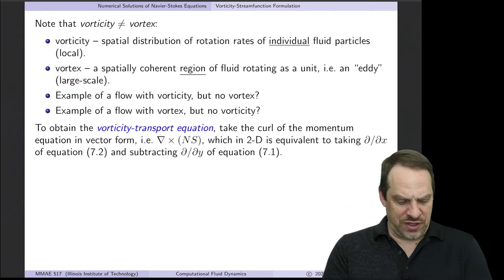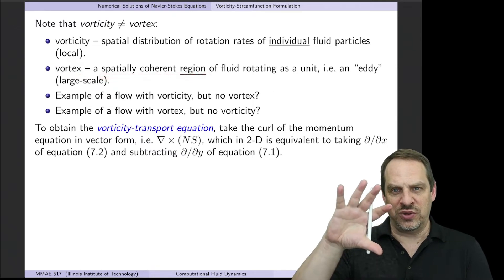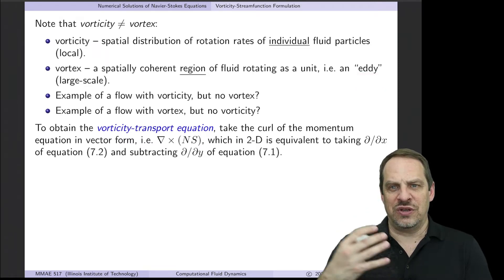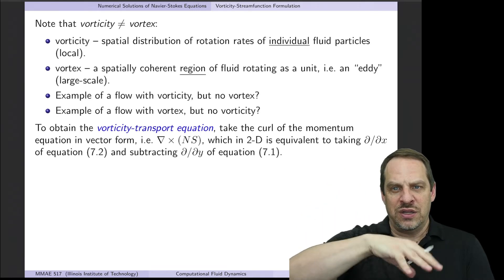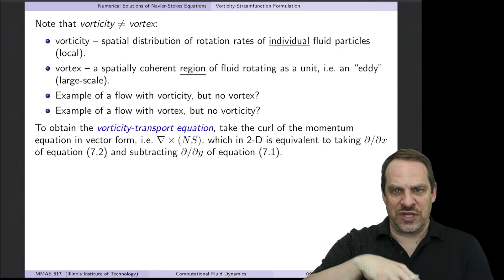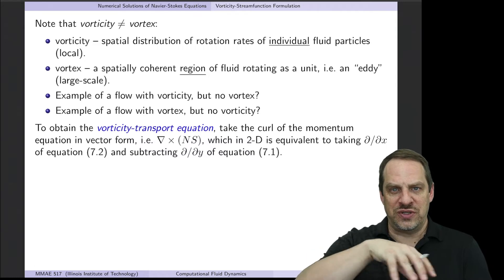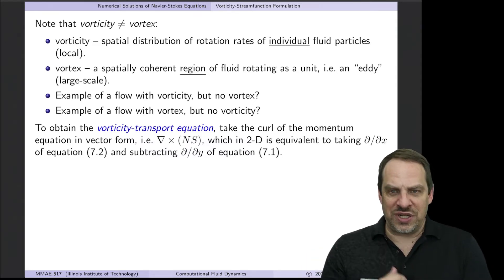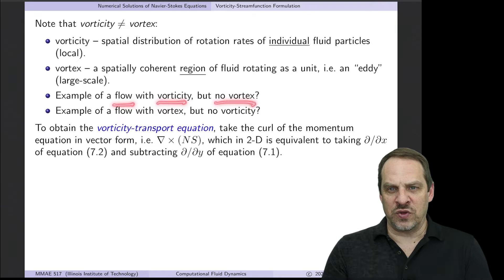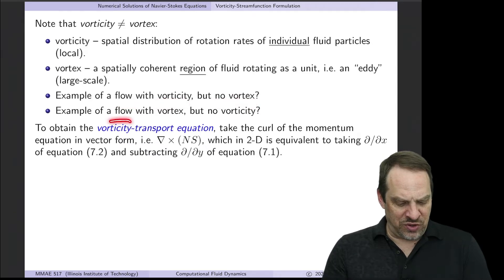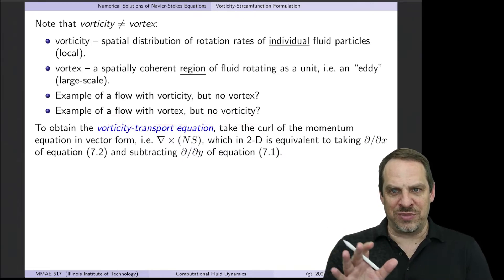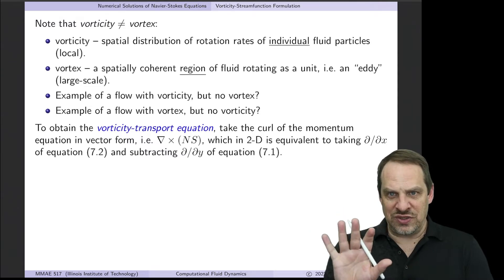A vortex, on the other hand, is a spatially coherent region of fluid — a whole region rotating together as a unit, like an eddy. Think of when you pull the stopper out of your drain and the water swirls around; that's a vortex. I'd like you to think of an example of a flow that has vorticity but no vortex, and another where the flow has a vortex but no vorticity. We'll come back at the end of the video and I'll give you an example of each.